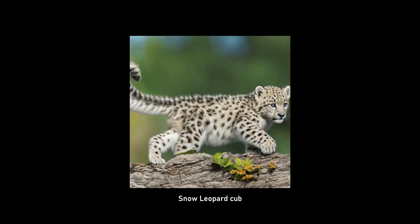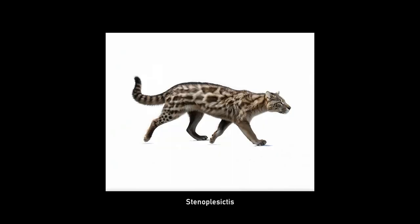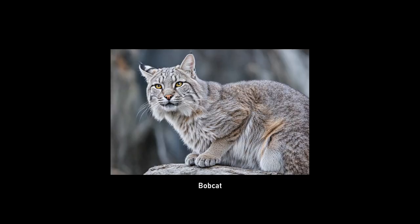However, the origins of felines go back much further. It dates back to the Oligocene period, 25 million years ago. Haplogale, a species that lived around 30 million years ago, is considered the common ancestor of cats and civets, though it cannot be fully classified as a Felid.